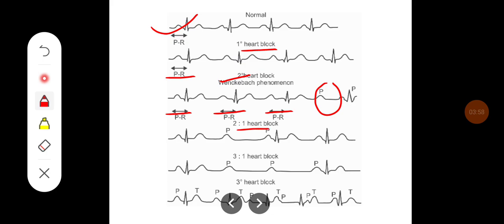In complete heart block there is 2 to 1 block: after two P waves there is appearance of ventricular complex. In 3 to 1 block, after three P waves there is appearance of one QRS complex. And third degree heart block is total AV dissociation, that is there is no relation between atria and ventricular contractions.